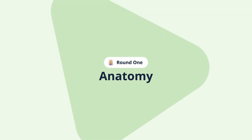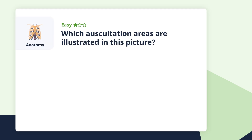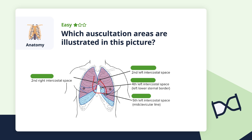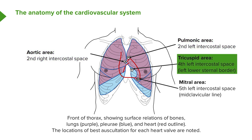Round one: anatomy. Let's start with an easy one. Which auscultation areas are illustrated in this picture? You can see that they're the aortic valve, the pulmonic valve, the tricuspid valve, and the mitral valve.